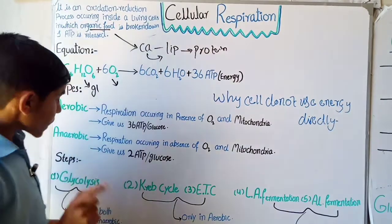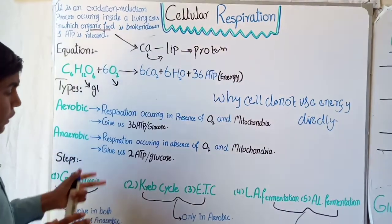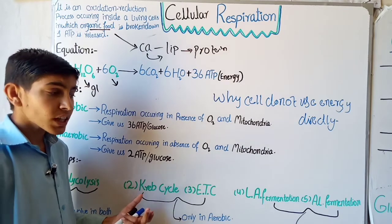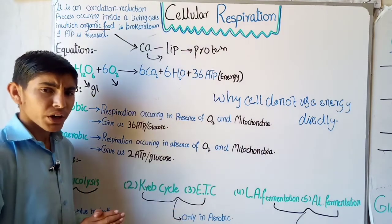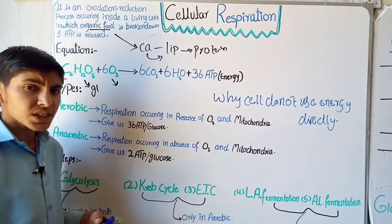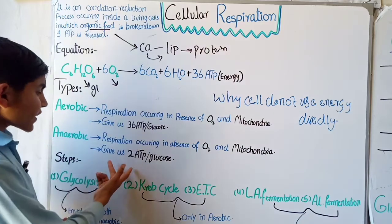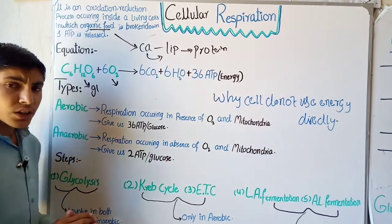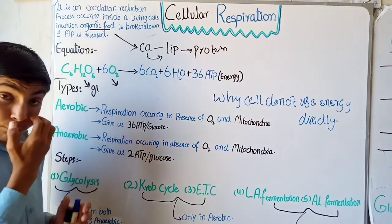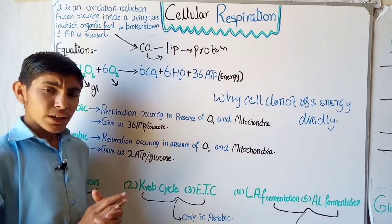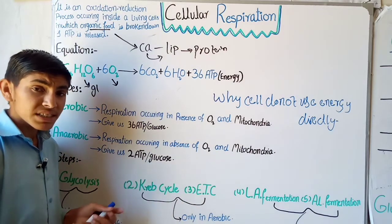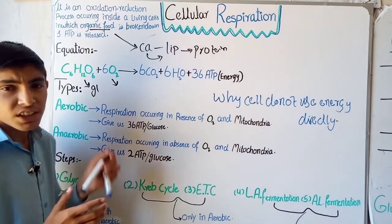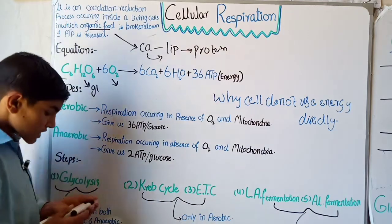The second type is anaerobic respiration, which occurs in the absence of O2, meaning O2 is not required, and mitochondria are also not required. This type of respiration occurs rarely in our body and gives us only 2 ATP per glucose molecule. The energy is very less, therefore our cells mostly do not undergo anaerobic respiration. Mainly in our body, anaerobic respiration occurs inside red blood cells, which do not have mitochondria and carry a lot of oxygen.